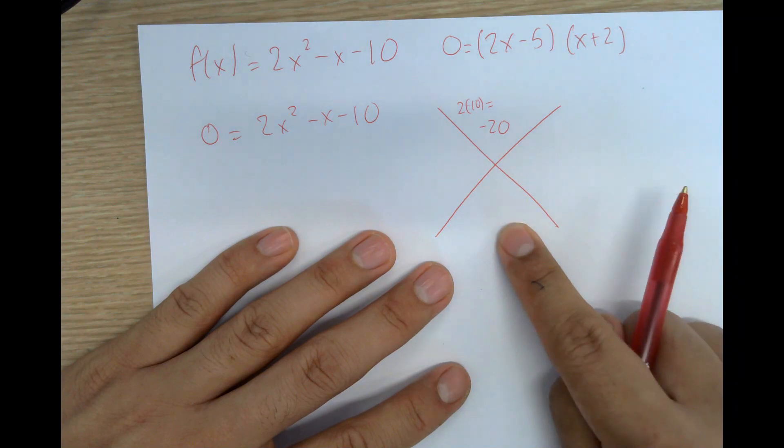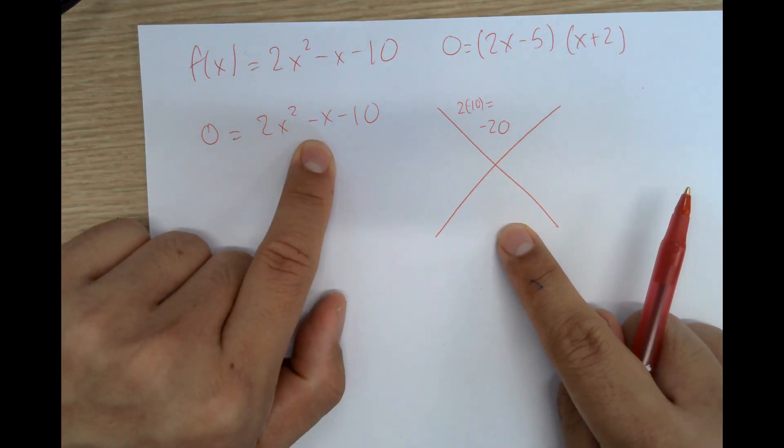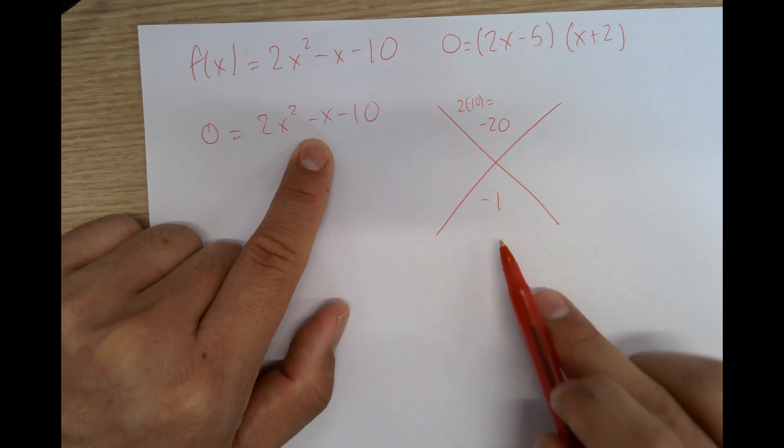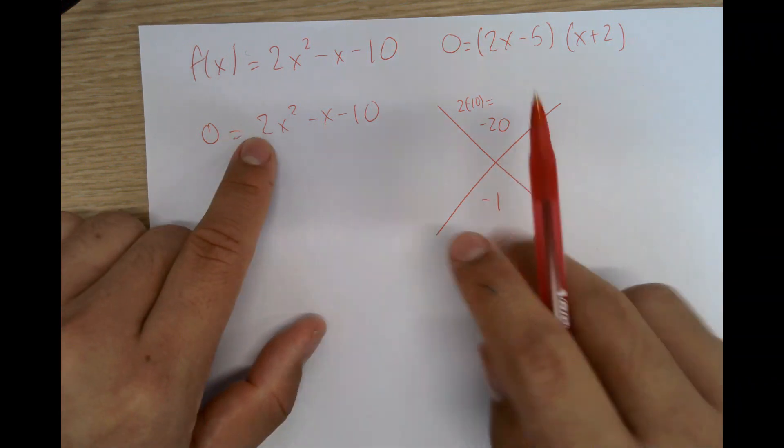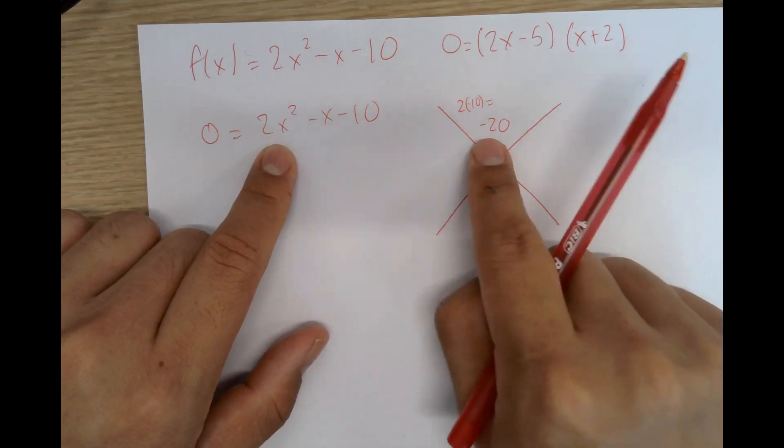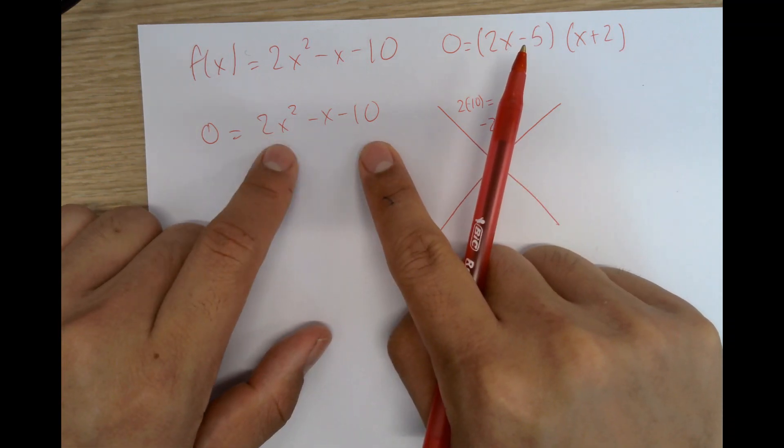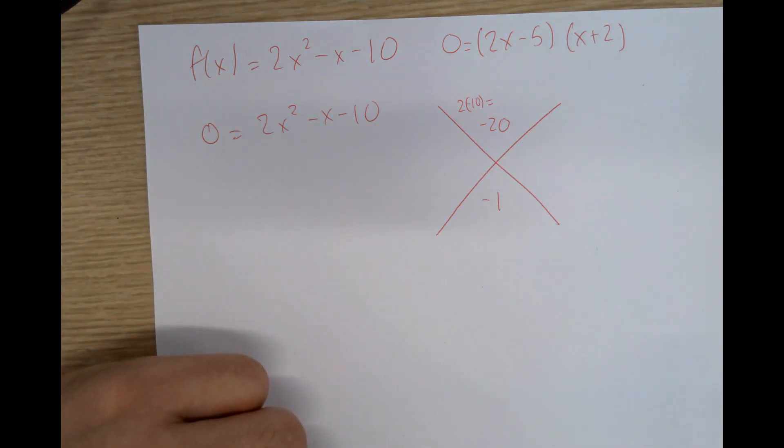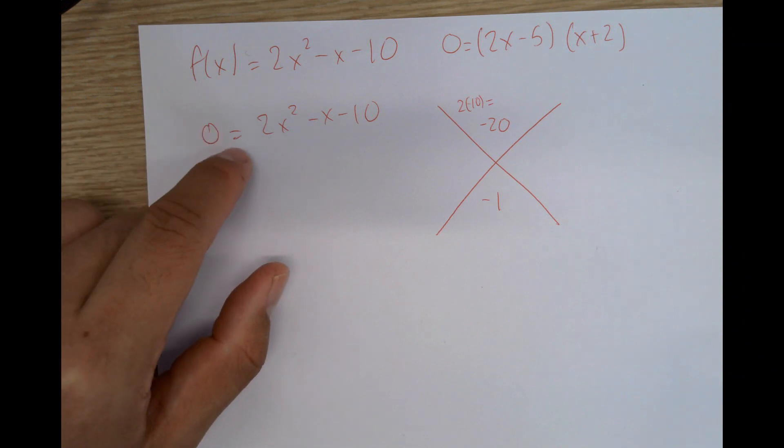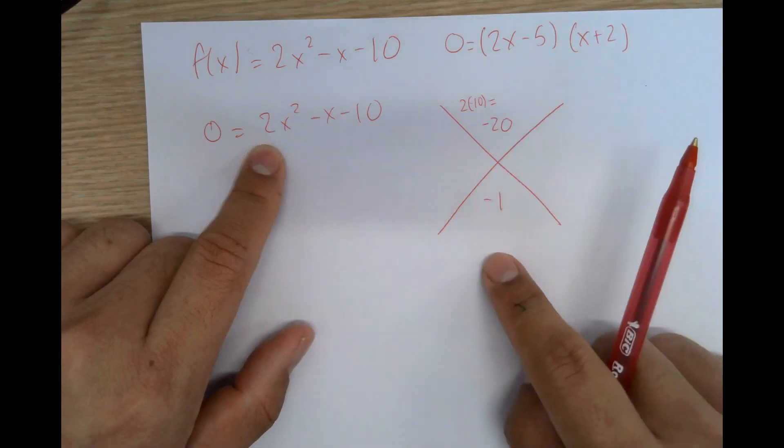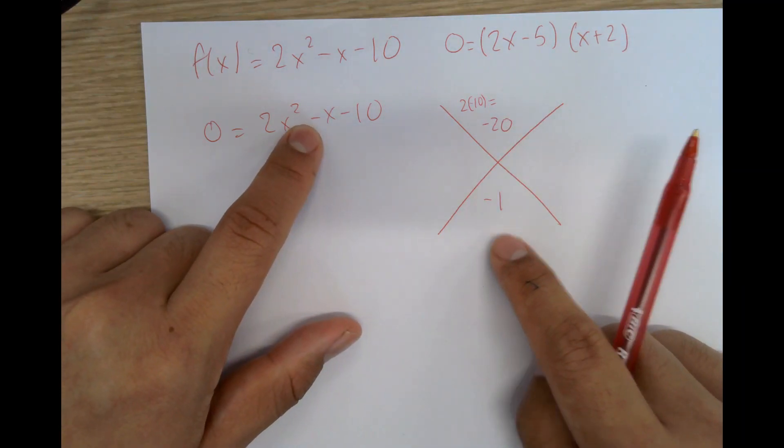The number you put on the bottom is the coefficient of the x value or -1. So the coefficient of just the x value is the number on the bottom. The number on top is the a value times the c value. So again, the number on top is the coefficient of x squared times the c value or the constant, and the number on the bottom is just the coefficient or the number in front of the b value.